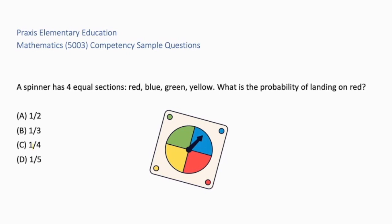A spinner has four equal sections: red, blue, green, yellow. What is the probability of landing on red? The spinner has a total of four sections, that is our whole. And the red takes up one part. So there is a probability of one-fourth of the spinner landing in the red section. A is incorrect because one half would be two out of four. B is incorrect, this would mean only three sections total. D would mean there are five sections total. The correct answer is C, one-fourth. One red out of four total.